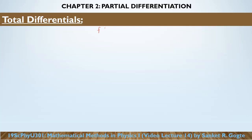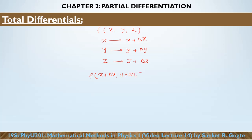Suppose I have a function which is a function of x, y, and z — so we have a function of three variables. Now suppose that we change x from x to x plus delta x, y from y to y plus delta y, and z from z to z plus delta z. These delta x, delta y and delta z in general can be positive or negative. When they are positive that means we are increasing the value of the independent variable, whereas if they are negative that means we are decreasing the value of that independent variable.